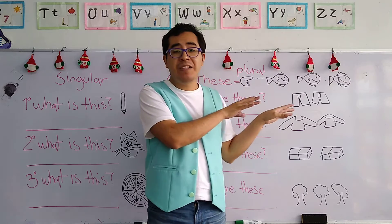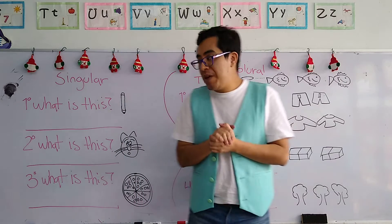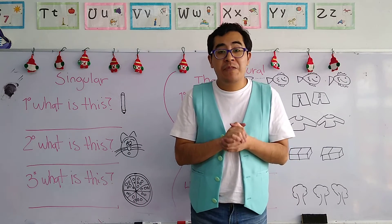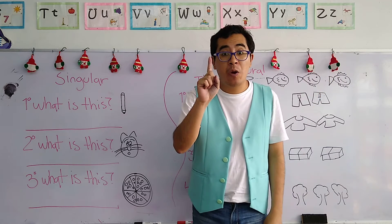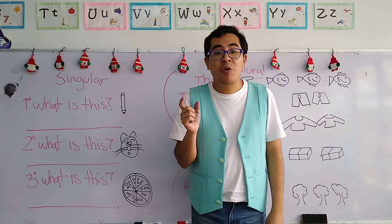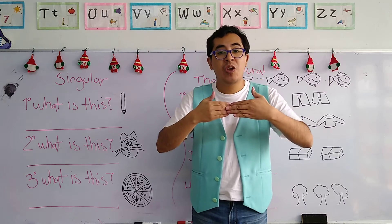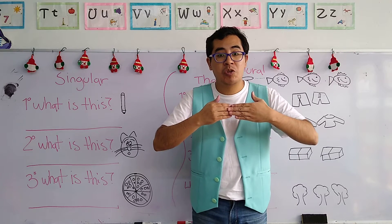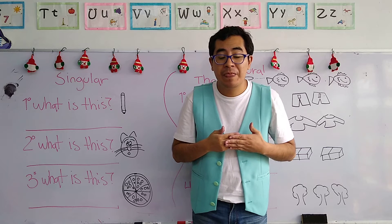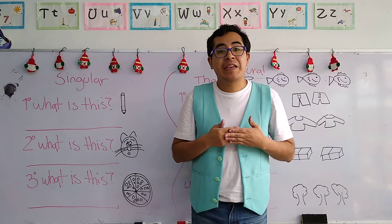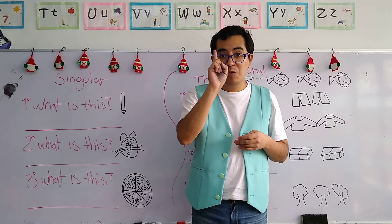But before we get into the new topic, let's have a review of 'this.' Remember, when we have the word 'this,' it means singular — for one object — but it's also when the objects are close to us, near to us. Cuando estos objetos están cerca de nosotros, vamos a utilizar la palabra 'this,' que quiere decir en español 'esto,' siempre y cuando sea para un solo objeto.